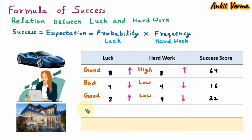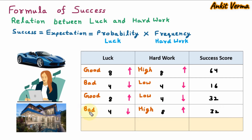In Case 4, luck is bad — represented with a downside arrow — with a score of 4 out of 10. But hard work is high — represented with an upside arrow — with a score of 8 out of 10. So 4 into 8 is 32. If we are not born at a very good place, have financial crisis and lack resources, but we do high hard work, we achieve a score of 32 — equivalent to the person with good luck who is doing nothing.